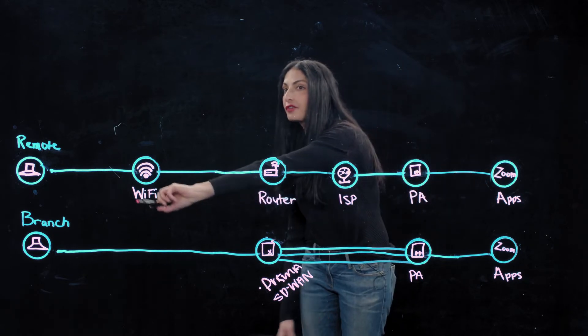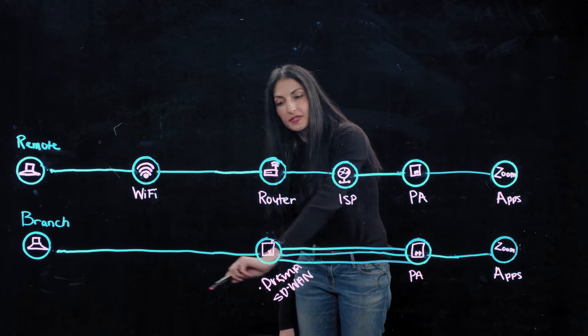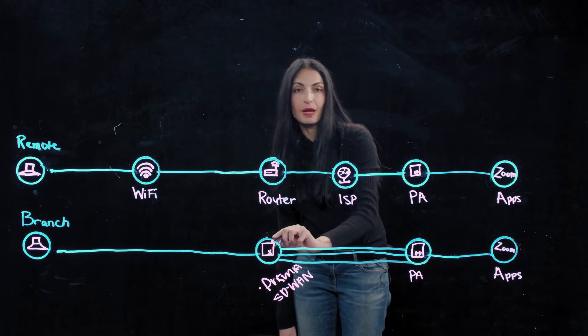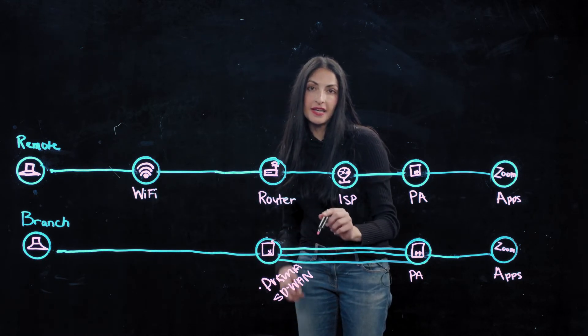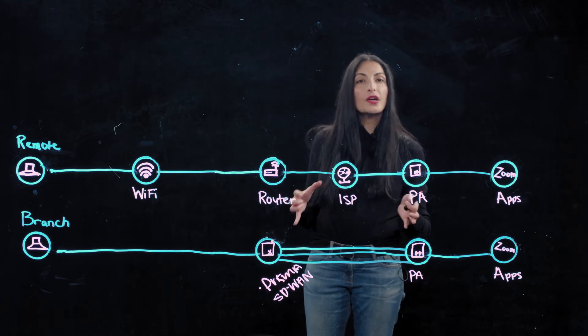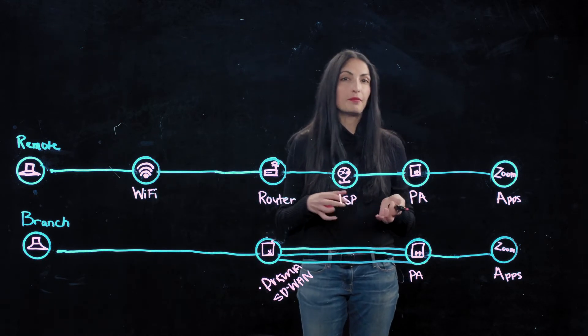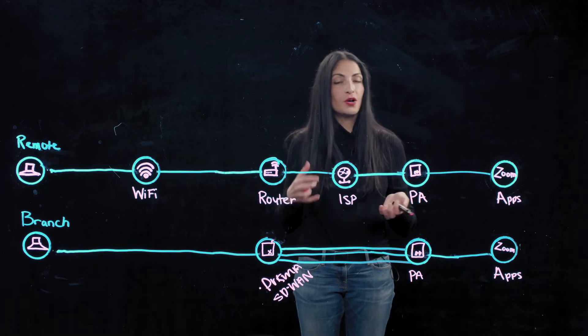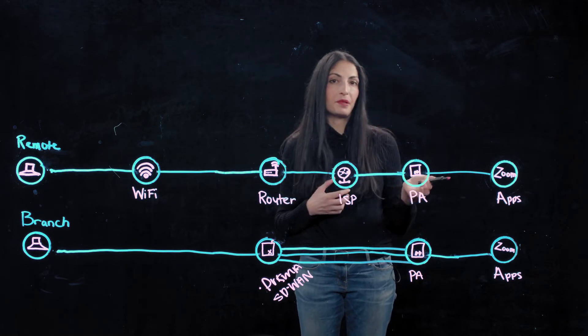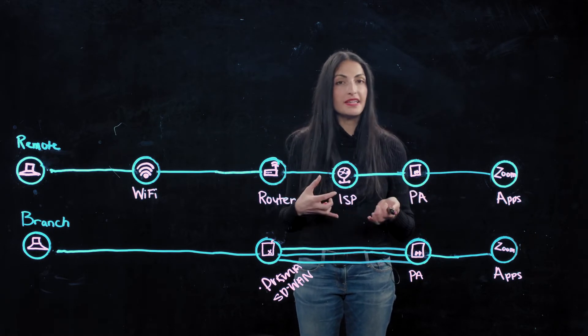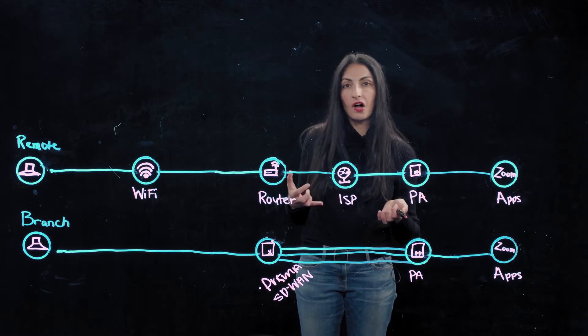If I was working from a branch office, I'd be connecting through my Prisma SD-WAN appliance. Now regardless of where I'm working from, whenever I have a problem accessing an application, I'm going to give IT a call.